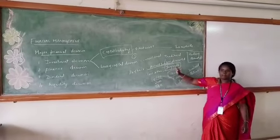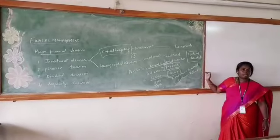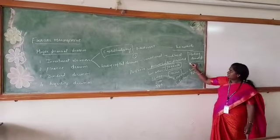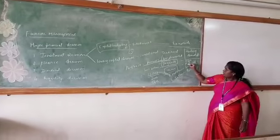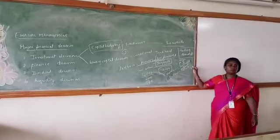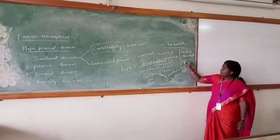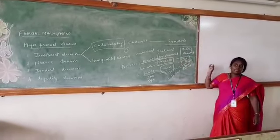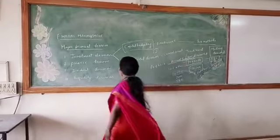With respect to the modern method, time value of money is considered, and it comprises three methods: NPV, profitability index, and IRR. These are the three most common methods used by any organization, out of which NPV is the most common tool in the modern method for the organization.